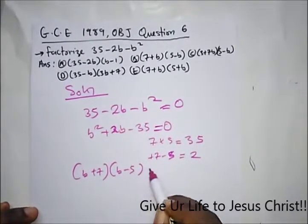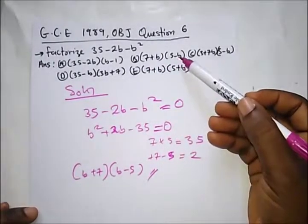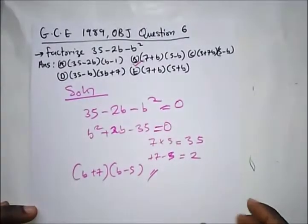So all we need to do here is put b here, b here, and we have plus 7 minus 5. This is our answer. So what's our correct option here? Plus 7 and minus 5, which is option b.